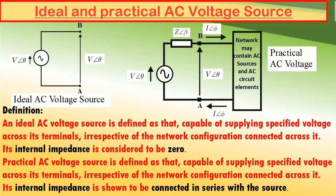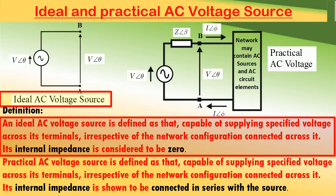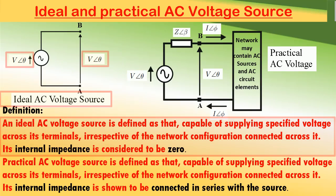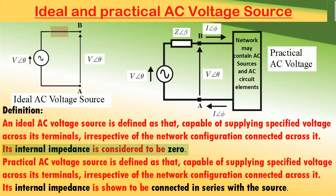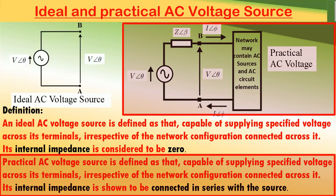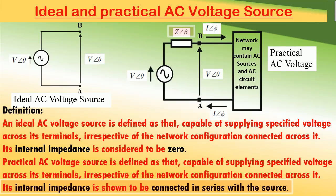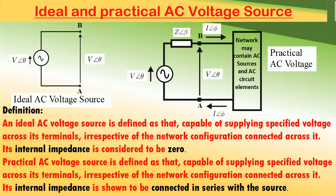Let us discuss ideal and practical AC voltage sources. An ideal AC voltage source is defined as that which is capable of providing a specified voltage across its terminals irrespective of the network configuration connected across it. The internal impedance of an ideal AC voltage source is considered to be zero, connected in series with the voltage source as shown in the figure.